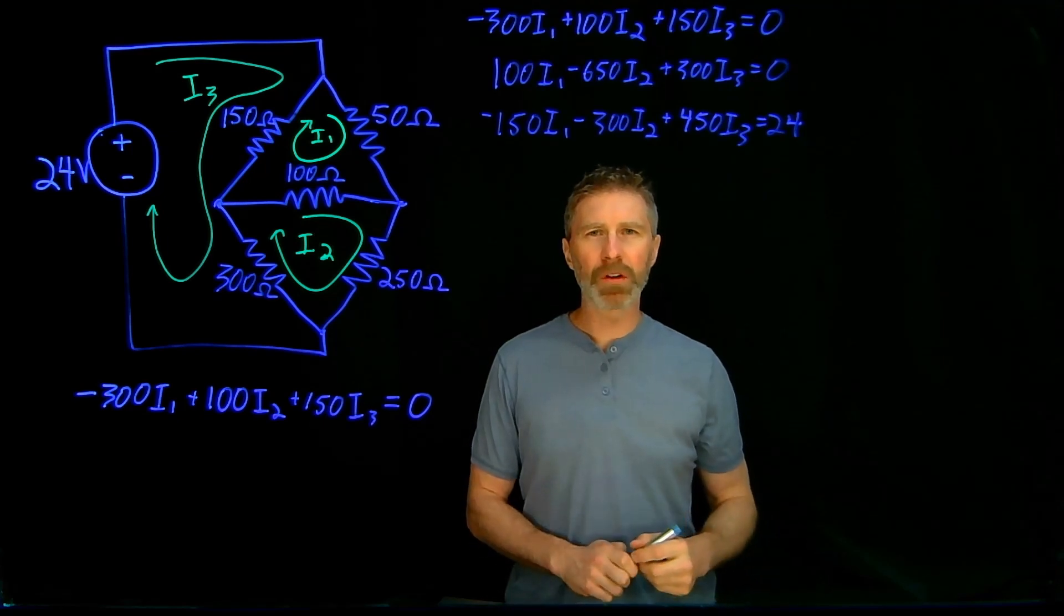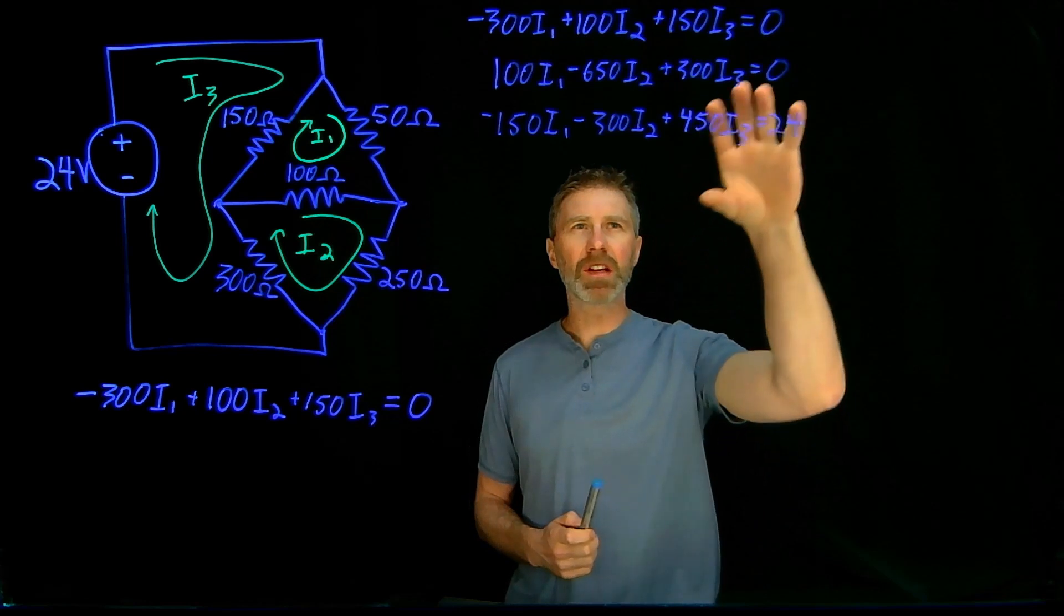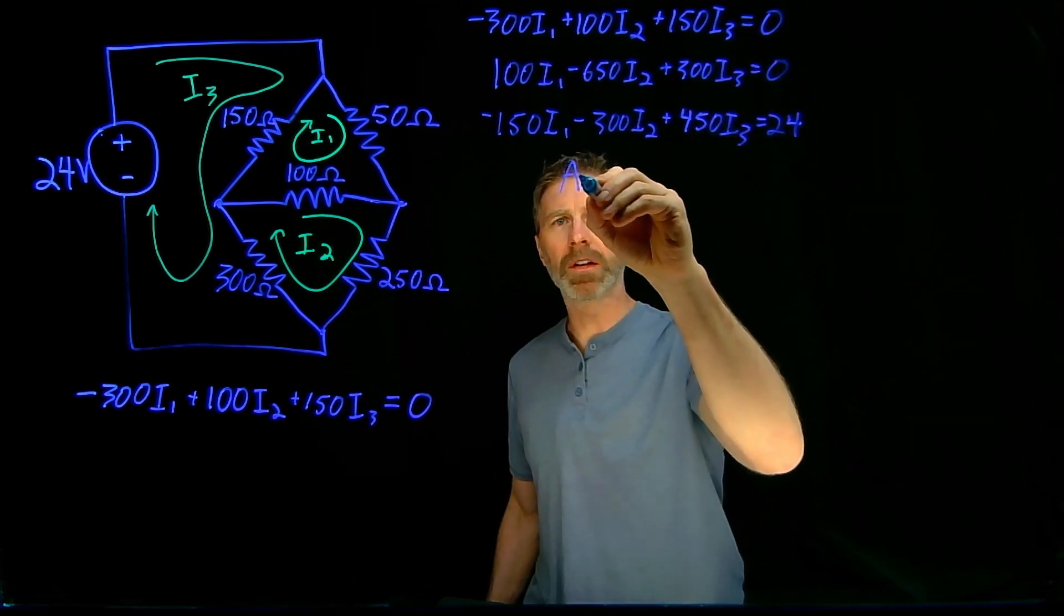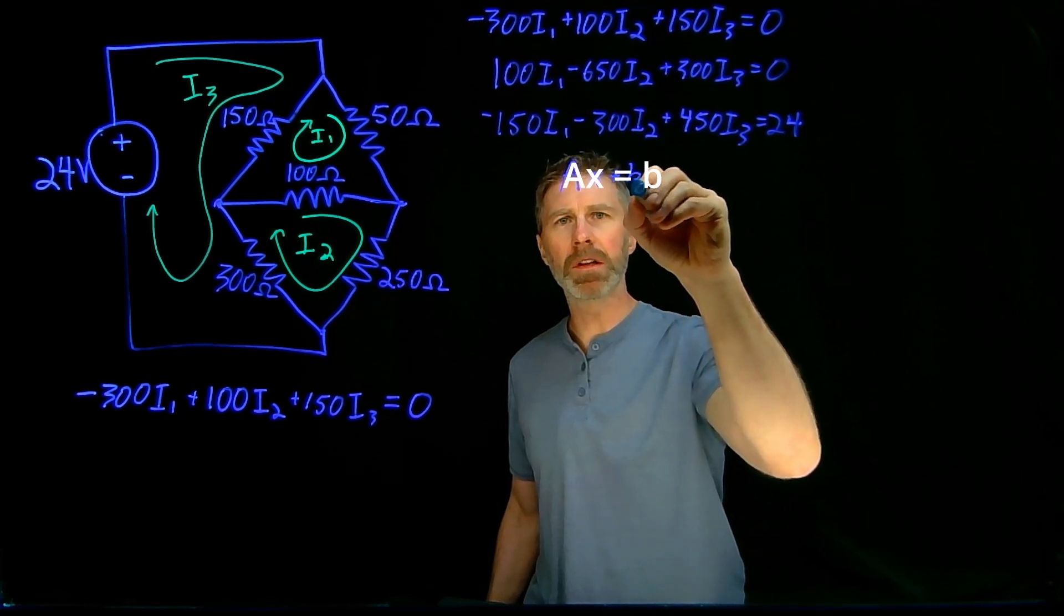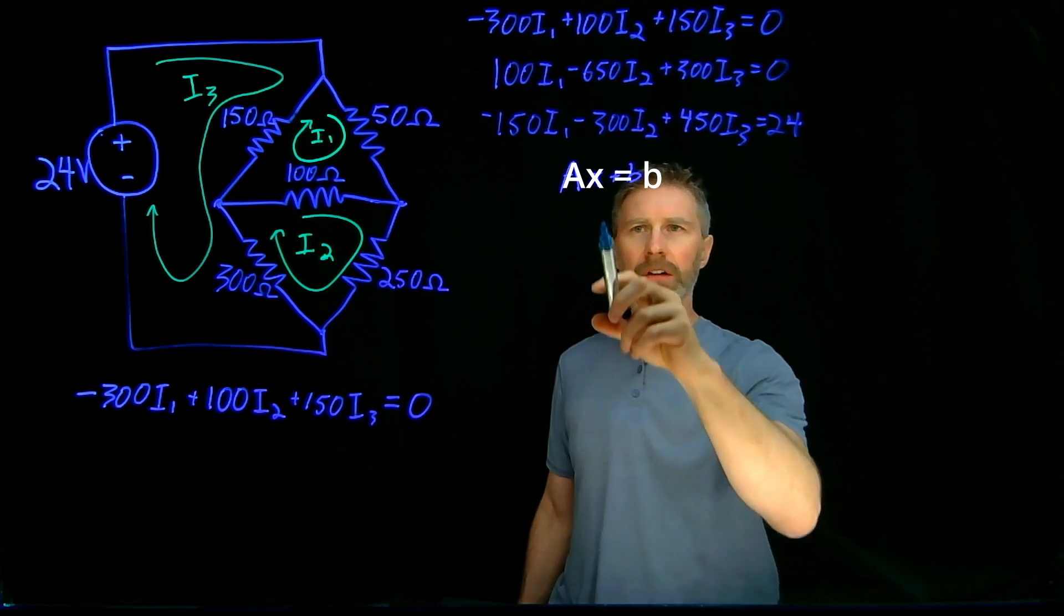One of the first steps when solving these sets of linear equations is to take these equations and put them into a matrix form. The general form of it is Ax = b, where A is the coefficient matrix, x is your vector of unknowns.